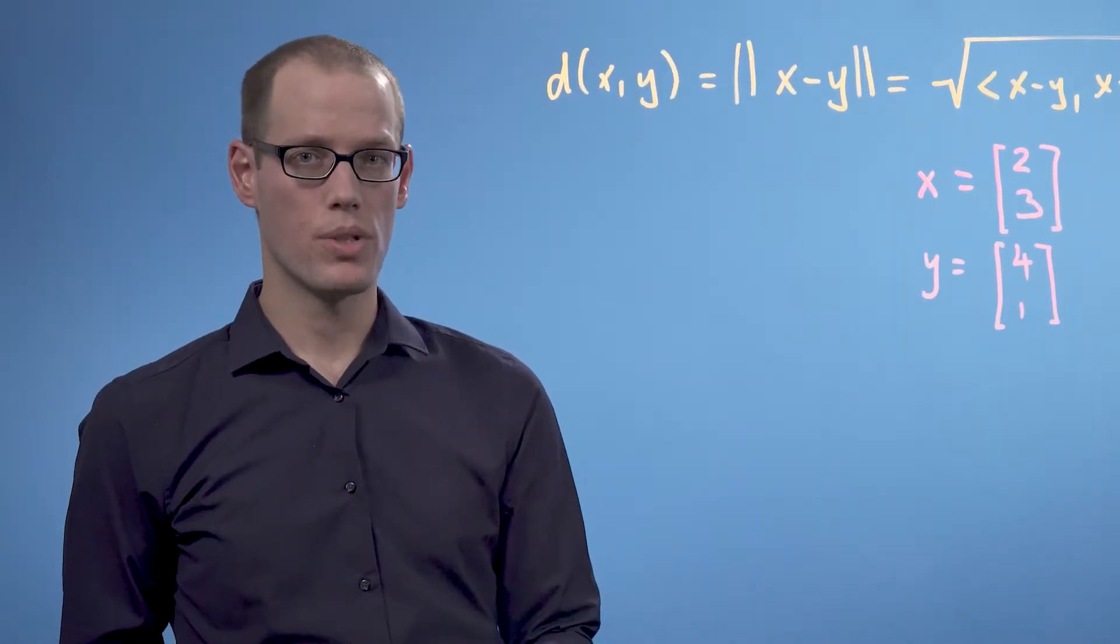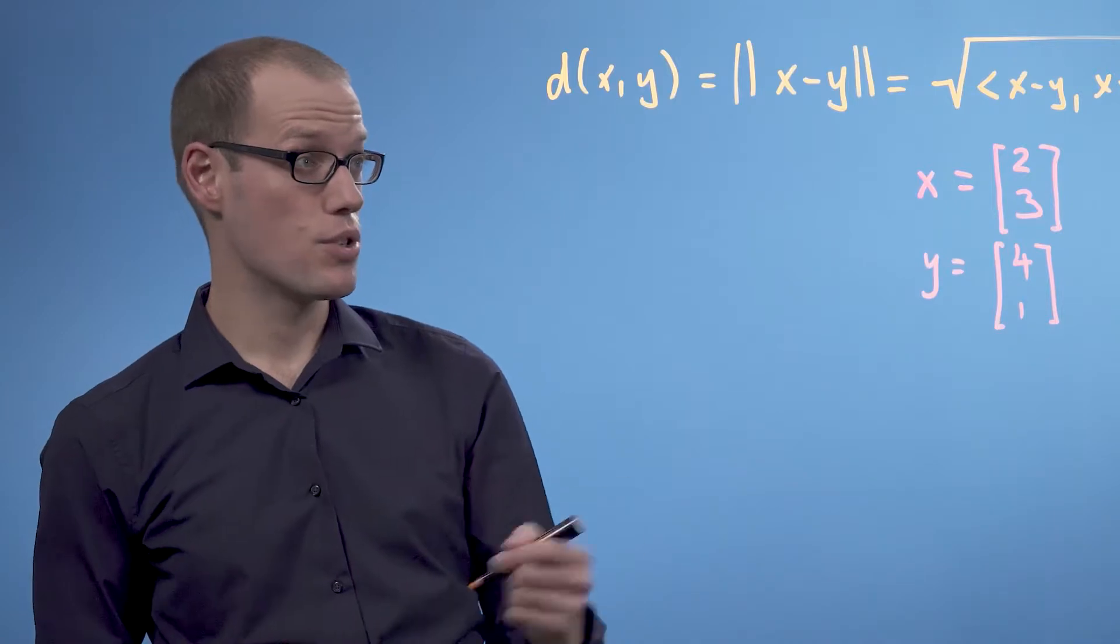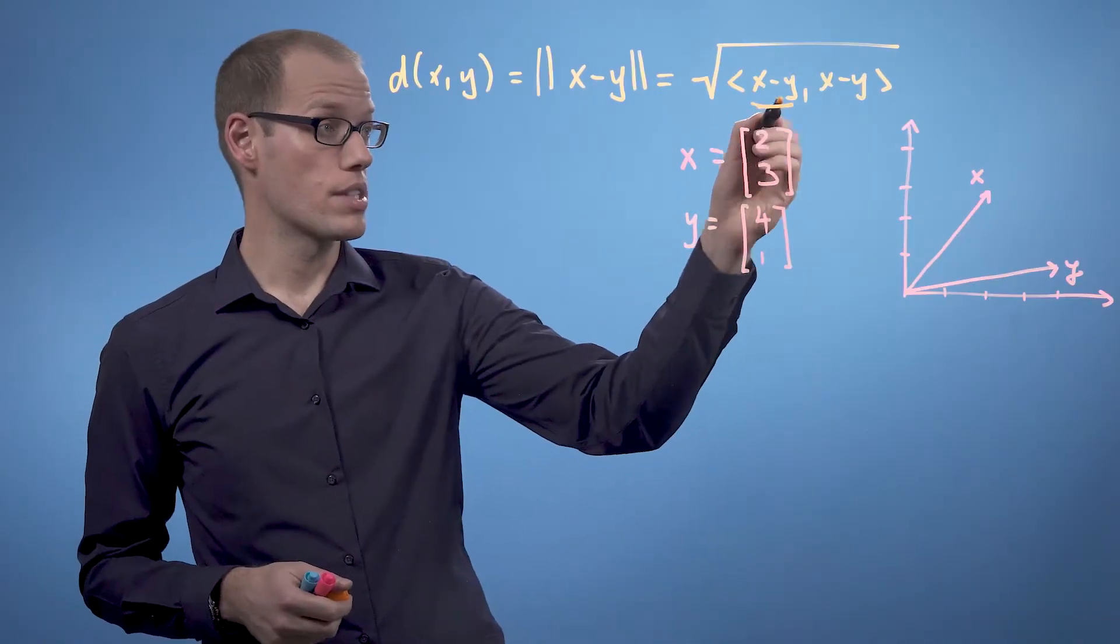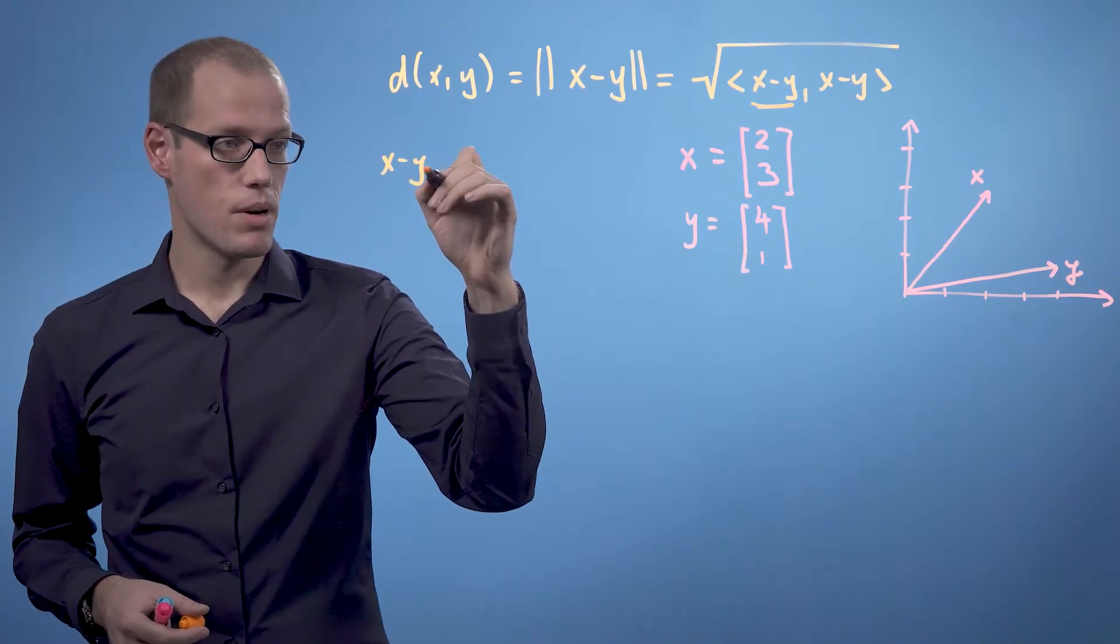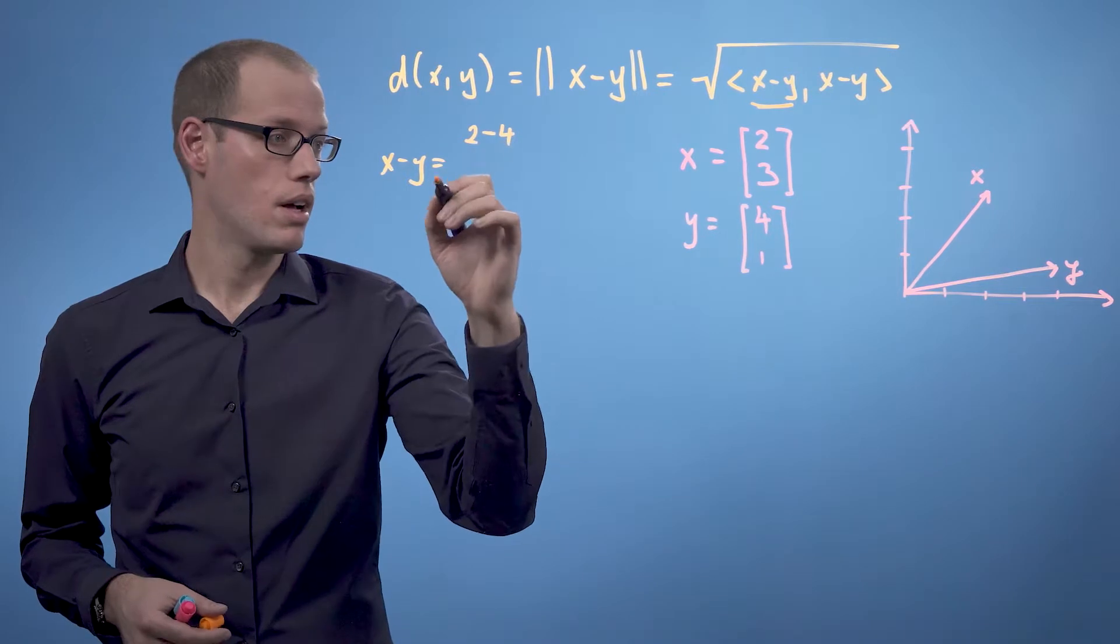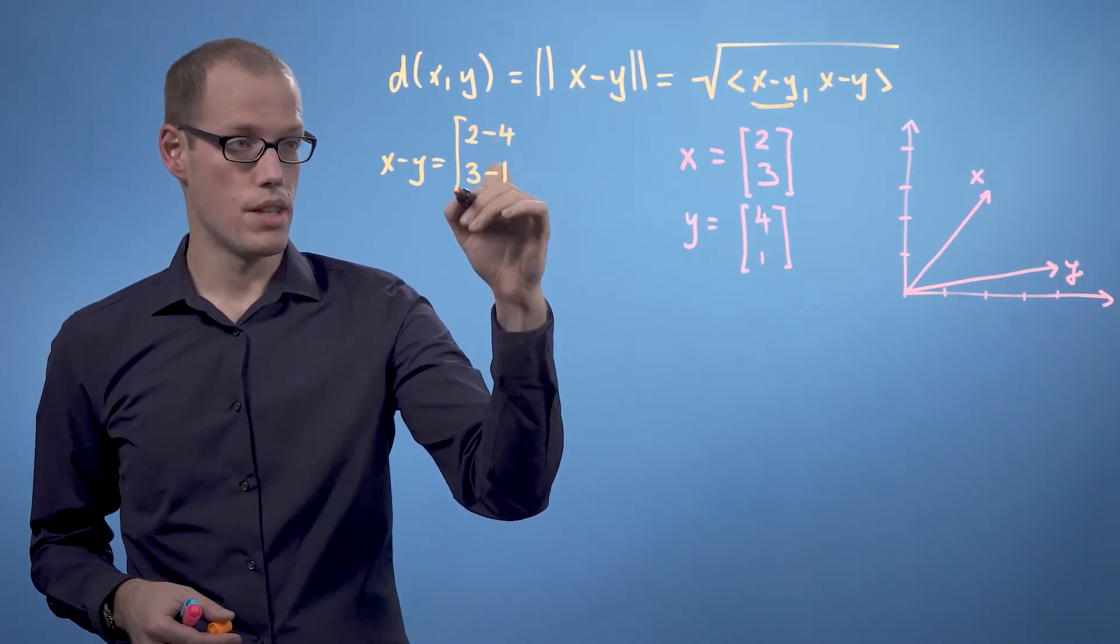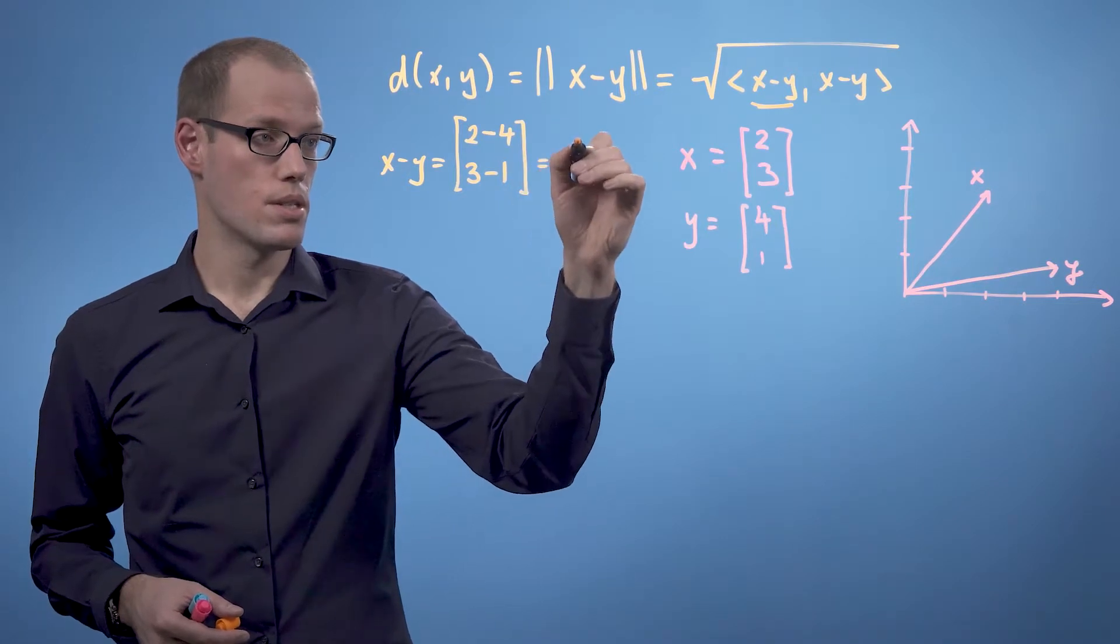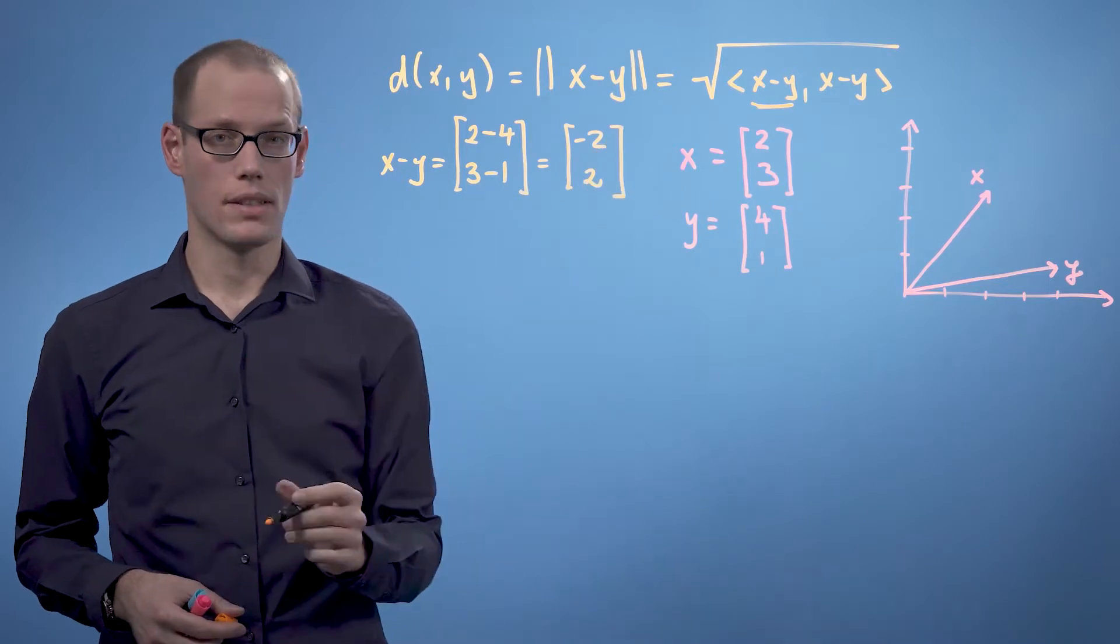In order to compute the distance between these two vectors, the first thing we need to do is look at the difference vector. So x minus y is 2 minus 4 in the first component and 3 minus 1 in the second component. That means we get [-2, 2] as the difference vector.